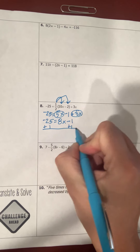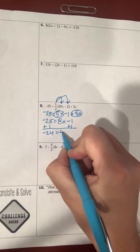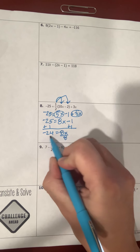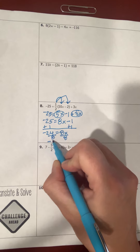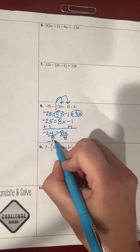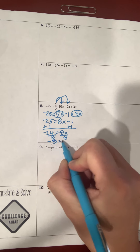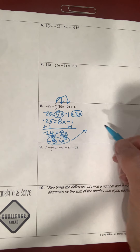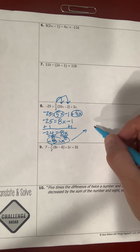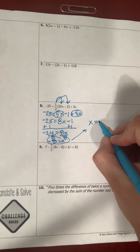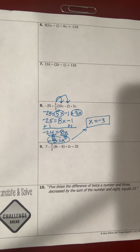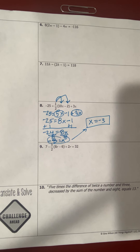I take the constant term to the left by adding 1, getting negative 24 equals 8x. Dividing both sides by 8 gives negative 3 equals x. I apply the symmetric property to write x equals negative 3 — and that's my answer.